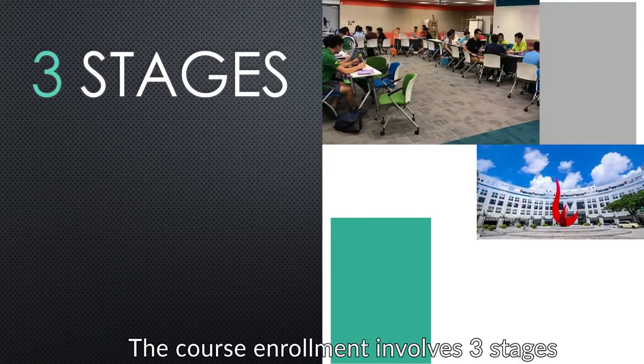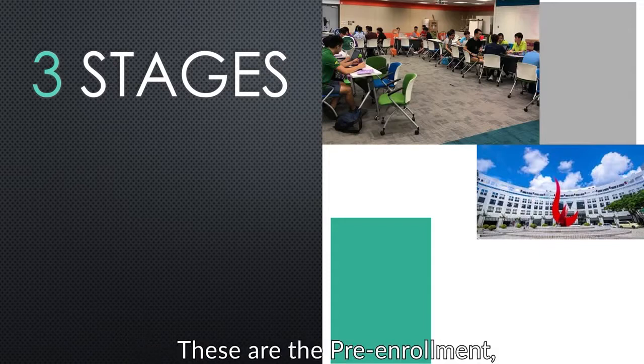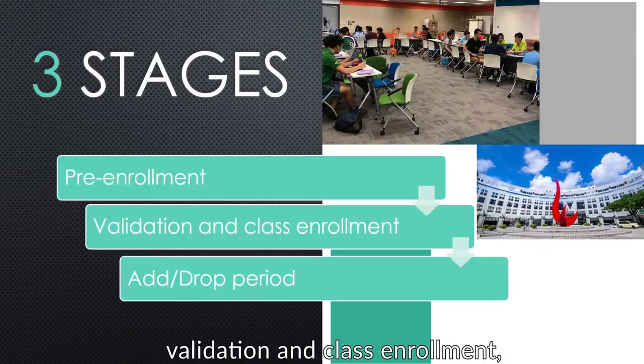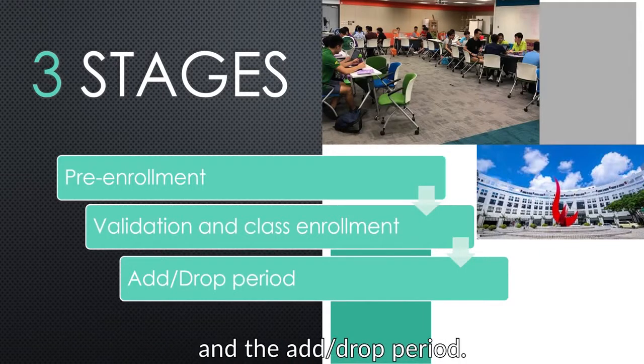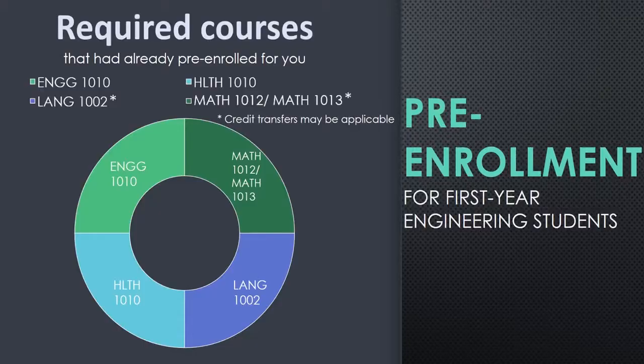The course enrollment procedure involves three stages. These are the pre-enrollment, the validation and class enrollment, and the add-drop period. The pre-enrollment.